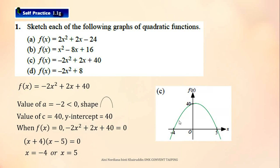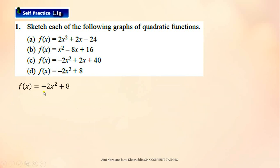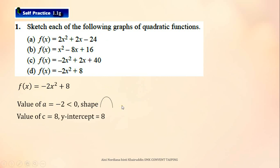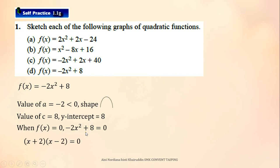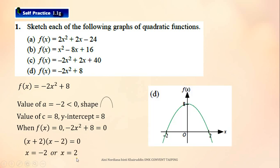Next, question D. This is the function. Since the value of A is negative 2, the shape of the graph will be a set (n-shape) graph. This is the y-intercept. When you factorize this quadratic equation, you will get the values of x as negative 2 and 2. You can sketch the graph showing the y-intercept and x-intercepts, which are the roots.